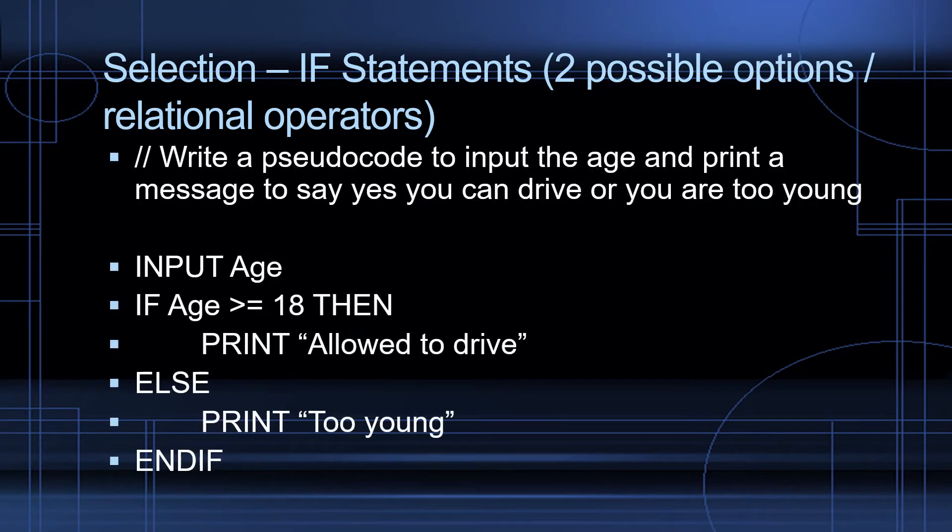Let's take a look at this example. Write a pseudocode to input the age and print a message to say yes, you can drive or you are too young. Here's how the algorithm works. Input age. Use a selection. If age is greater than or equal to 18, then print allow to drive. Else, print too young. And if. Now, this algorithm had two options, either this or this, and it had a relational operator. So in this case, we would use if.